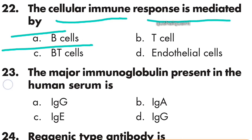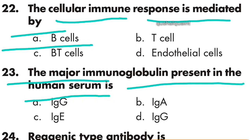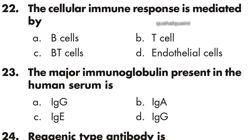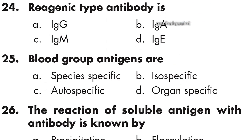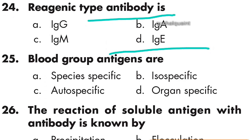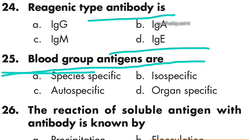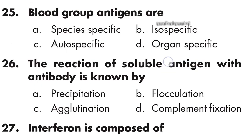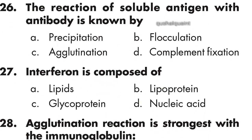Question 23: The major immunoglobulin present in human serum is IgG, option A is right. Question 24: Reagenic type antibody is IgE, option D is right. Question 25: Blood group antigen is isospecific, option B is right. Question 26: The reaction of soluble antigen with antibodies is known as precipitation, option A is right.